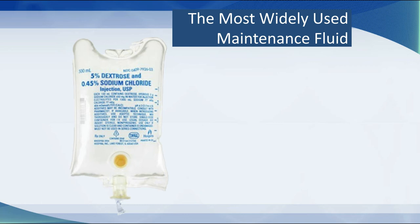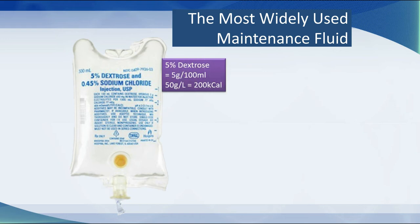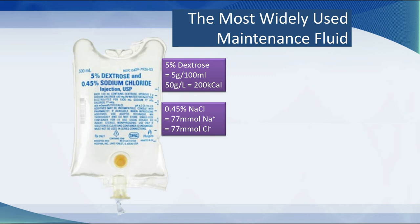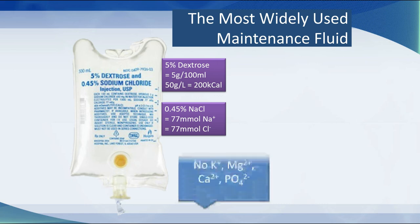Unfortunately, what most people use is 5% dextrose with half-strength saline. It's isotonic because of the dextrose — it functions as a hypotonic fluid, but it is isotonic. The 5% dextrose is 50 grams per litre, giving 200 kilocalories per bag. With half-strength saline, you have 77 millimoles of sodium and 77 millimoles of chloride — pretty much what Vincent needs. But unfortunately, there is no potassium, magnesium, calcium, or phosphorus.